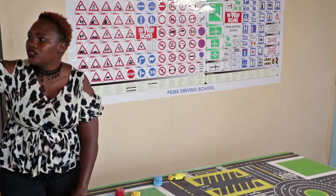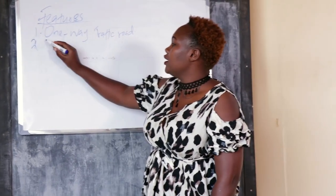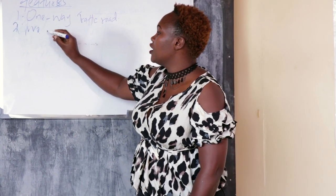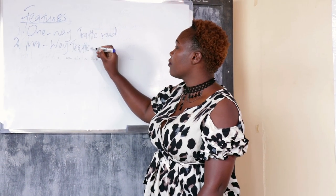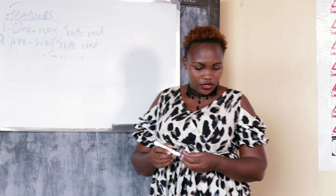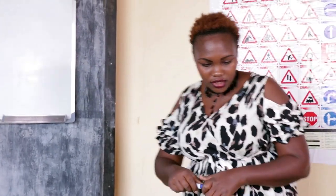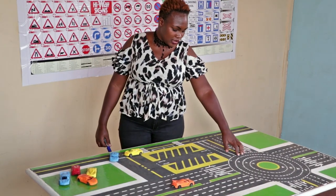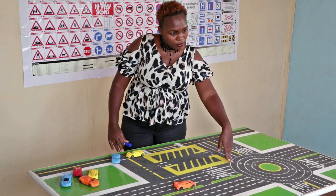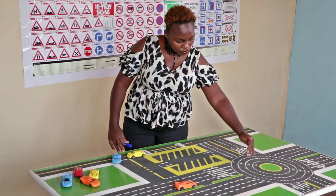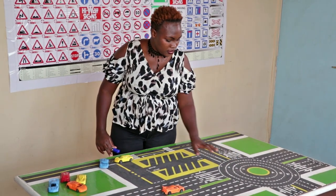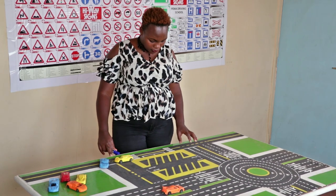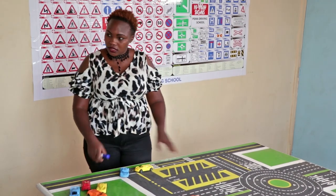So we have the two-way traffic road. Another feature in this table is the roundabout. The roundabout, as you can see, has four lanes. You count from outside: one, two, three, four. So we have four lanes in the roundabout, and we will deal with roundabouts in more detail later.